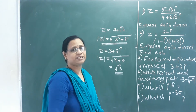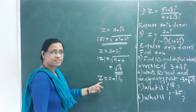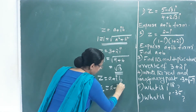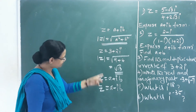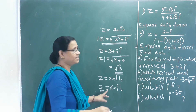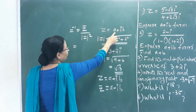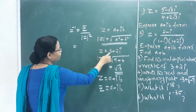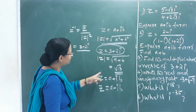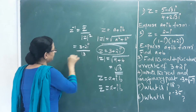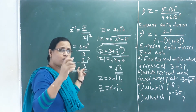The next topic is conjugation. If z = a + ib, then the conjugate z̄ = a - ib. The multiplicative inverse uses the formula: z⁻¹ = z̄ / |z|². For example, if z = 3 + 2i, then z̄ = 3 - 2i and |z|² = 13, so z⁻¹ = (3 - 2i)/13.